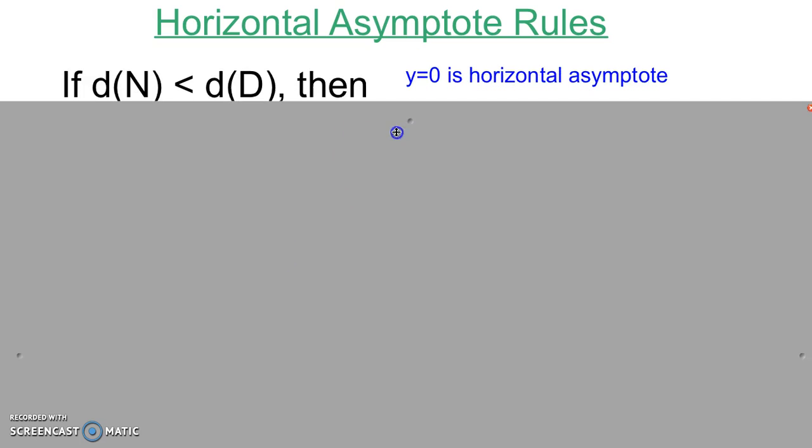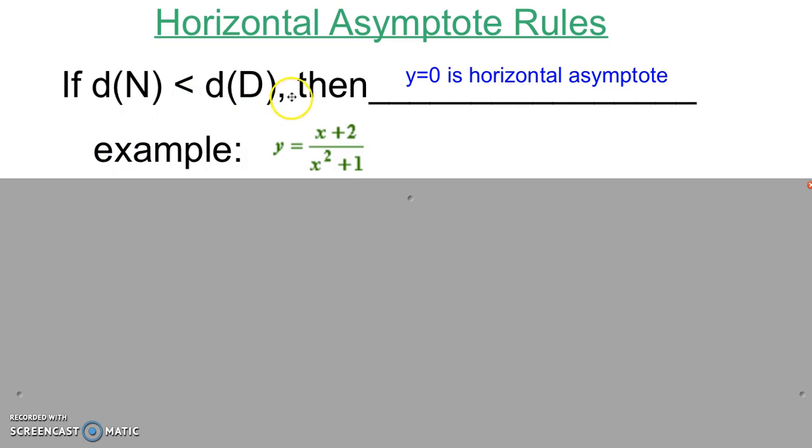There are rules for horizontal asymptotes. To follow them, we're going to look at the degree of the numerator and the denominator. If the degree of the numerator is less than the degree of the denominator, then the horizontal asymptote is y equals zero automatically. Let's look at the degrees in this example. The degree of the numerator is one because the highest exponent is one. The degree of the denominator is two. Because one is less than two, y equals zero is the horizontal asymptote.